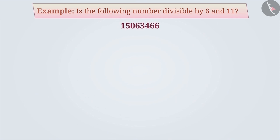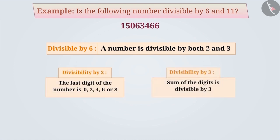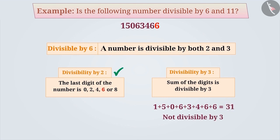Next example. Is the following number divisible by 6 and 11? The rule of divisibility by 6 says that if a number is divisible by both 2 and 3, then the number is also divisible by 6. So, for the given number, first we check the divisibility by 2 and 3. Since the last digit of the given number is 6, it is among 0, 2, 4, 6, or 8. Therefore, this number is divisible by 2. Similarly, the sum of the digits of the given number is 31. Since 31 is not divisible by 3, the given number is also not divisible by 3. Even though the given number is divisible by 2, it is not divisible by 3. Thus, the given number is not divisible by 6.